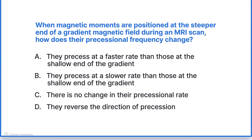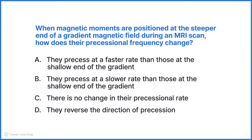Let's take a look at a question to check your understanding. When magnetic moments are positioned at the steeper end of a gradient magnetic field during an MRI scan, how does their precessional frequency change? A. They precess at a faster rate than those at the shallow end of the gradient. B. They precess at a slower rate than those at the shallow end of the gradient. C. There is no change to their precessional rate. D. They reverse the direction of precession. Take a second and figure it out on your own.